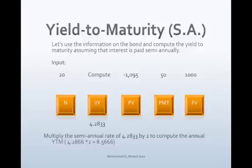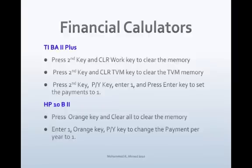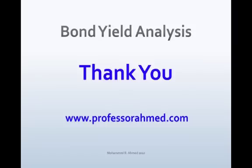Therefore, if you invest in a 10% corporate bond with interest paid semi-annually and hold the bond until it matures, the rate of return to the investor is 8.566%. Thank you.